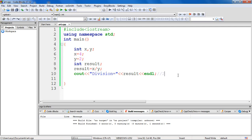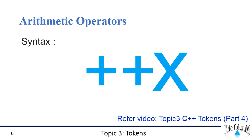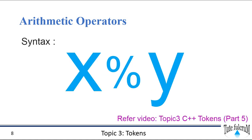There are a few more arithmetic operators available in C++. We have the increment operator, which adds 1 to the operand, and you can use it as either pre-increment or post-increment — we have already discussed this in our previous sessions; the link is provided in the description box. We also have the decrement operator, which subtracts 1 from the operand, and the modulo operator, which gives the remainder when you divide x by y — both also covered in previous sessions.